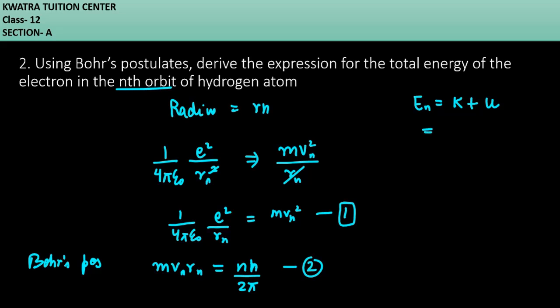What is our kinetic energy? Which is half mvn square. And how much is our u? This is my u. I will take it as negative. 1 by 4 pi epsilon not e square over Rn. This is my third equation.